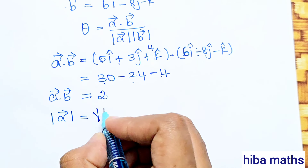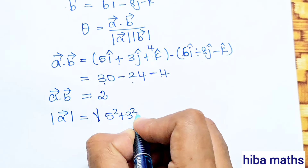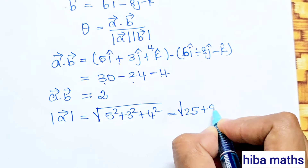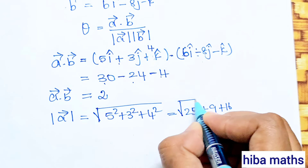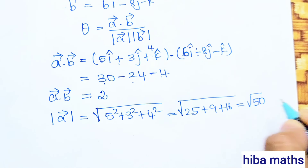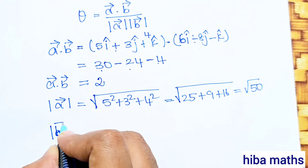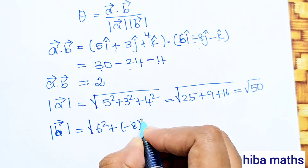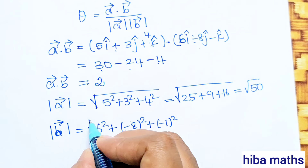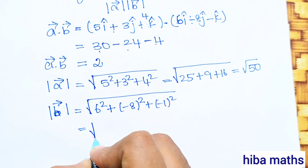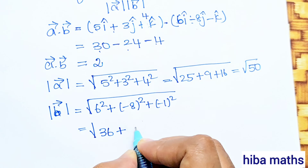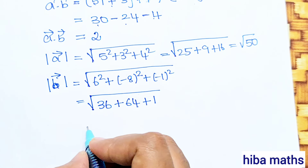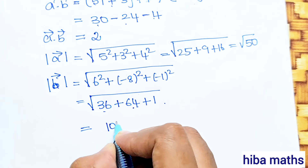The modulus of a vector is the root of 5 squared plus 3 squared plus 4 squared. 5 squared is 25, 3 squared is 9, 4 squared is 16. 25 plus 9 plus 16 is root of 50. That is modulus of b vector: root of 6 squared plus minus 8 squared plus minus 1 squared, which equals root of 36 plus 64 plus 1, giving root of 101.